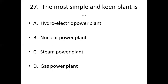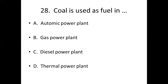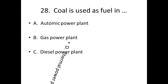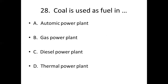Twenty-eighth bit. Coal is used as fuel in dash. Option A: Atomic power plant. Option B: Gas power plant. Option C: Diesel power plant. Option D: Thermal power plant. Answer: Option D, Thermal power plant.